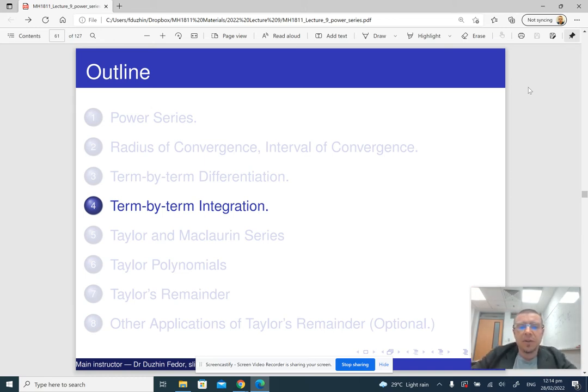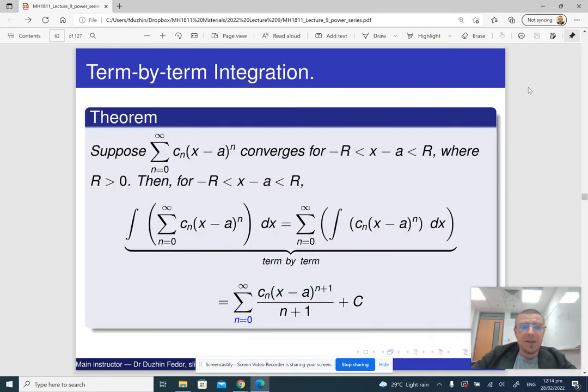We have seen how to differentiate a power series term by term. So now, naturally, we are going to integrate a power series term by term. Basically, the idea is the same. If you have a function represented by a power series, then in order to find the integral of the function, you just integrate every term of the power series and add them together. And that's going to be it.